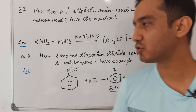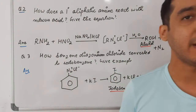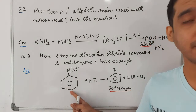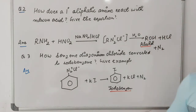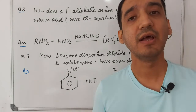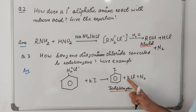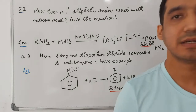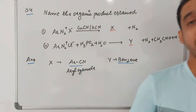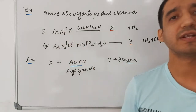Question three: how is benzene diazonium chloride converted to iodobenzene? When you react benzene diazonium chloride with KI (potassium iodide), it results in the formation of iodobenzene, KCl, and N₂ is released.